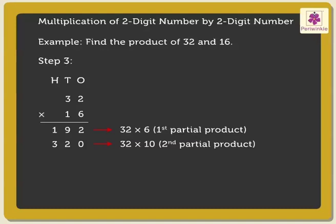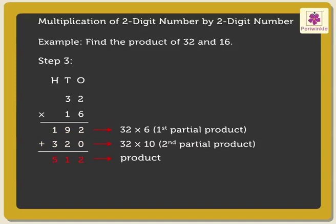Step 3. Now, add both the partial products obtained, that is 192 plus 320, to get the answer, which is equal to 512.